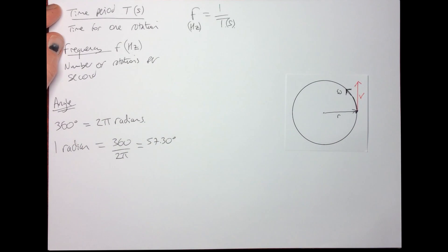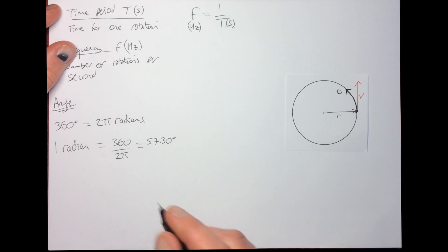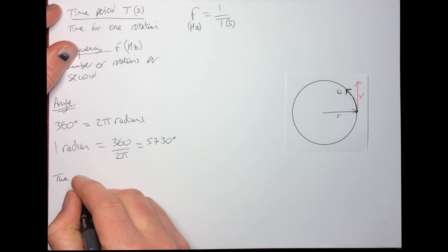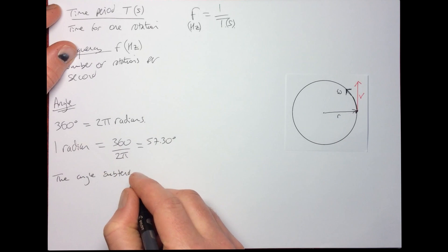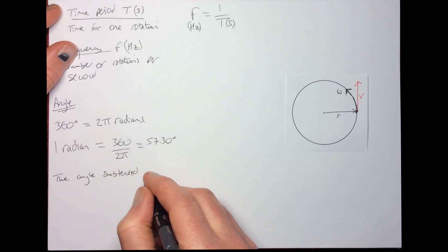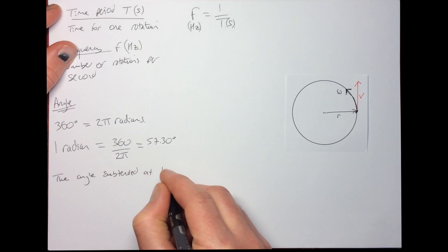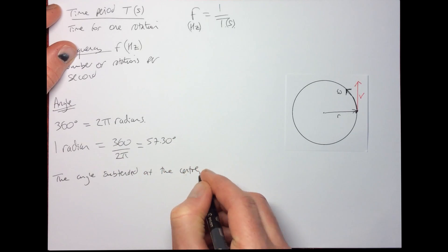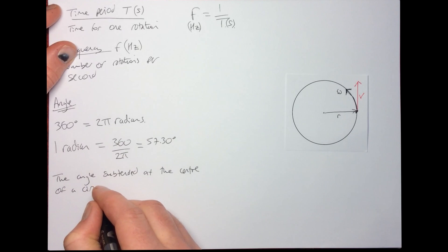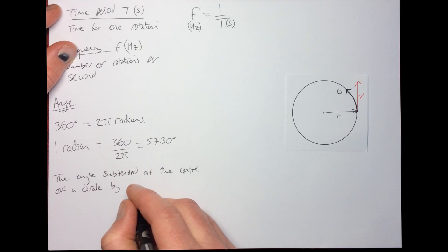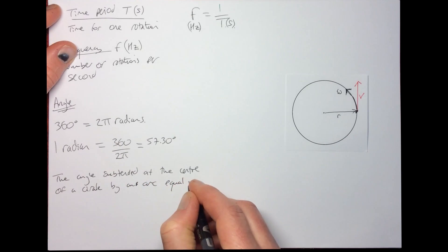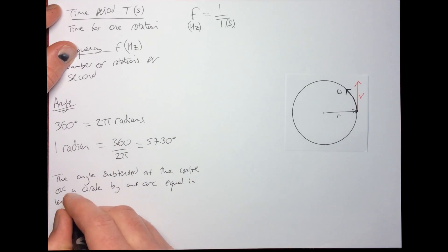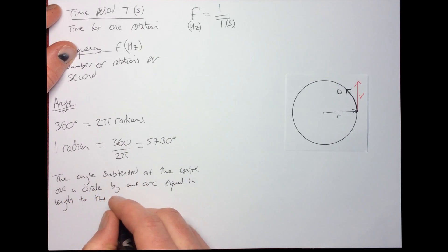The actual definition of the radian is the angle subtended at the center of a circle by an arc equal in length to the radius.